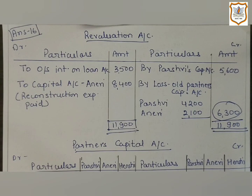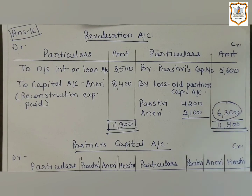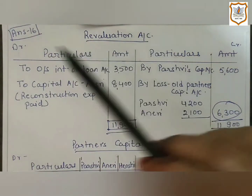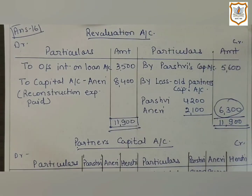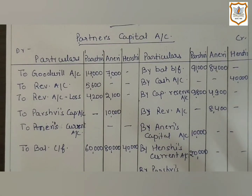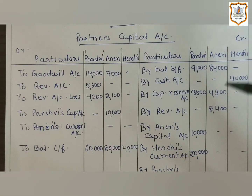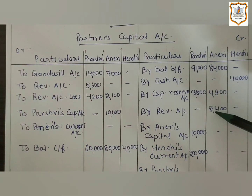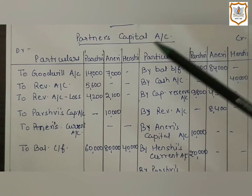In the next point, reconstruction expense is paid by Aniri — 8,400. Reconstruction expense is actually an expense of the partnership firm paid by the firm itself, so it is a loss and will be recorded on the debit side of the Revaluation Account. The second effect will be on the Capital Account: Aniri's Capital Account will be credited by 8,400 as she is paying the reconstruction expense on behalf of the firm.